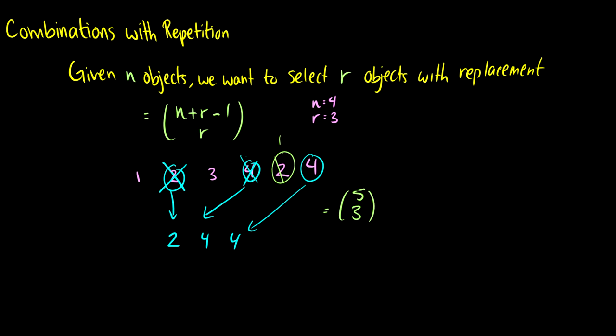So you can see that this is five choose three. If we put in our, sorry, this should be six choose three. If we plug in our formula here, we would get four plus three minus one choose three, which is just equal to six choose three. So that's the intuition here.